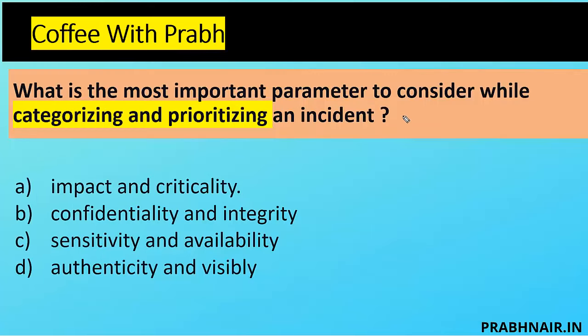Next coffee shot: what is the most important parameter to consider while categorizing and prioritizing an incident? Option A is impact and criticality — makes sense; criticality is also called urgency. Options B, C, and D reference CIA triad components and authenticity, but miss others. The closest option is A: impact and criticality. The effect of an incident on operations is criticality or impact, and the timeframe in which the incident must be resolved to avoid unacceptable impact is urgency. Impact and urgency play a vital role in prioritizing incidents, which is part of the triage phase.